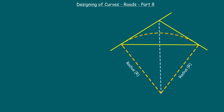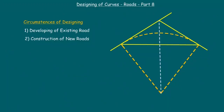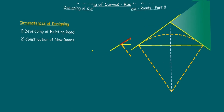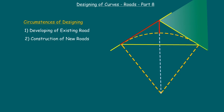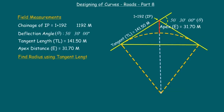What is designing of a curve? It is nothing but finding a convenient radius to employ the curve on the road. At any circumstances we must know the most accurate deflection angle at the point of intersection. Most of the design of curves is done with the help of the apex distance.